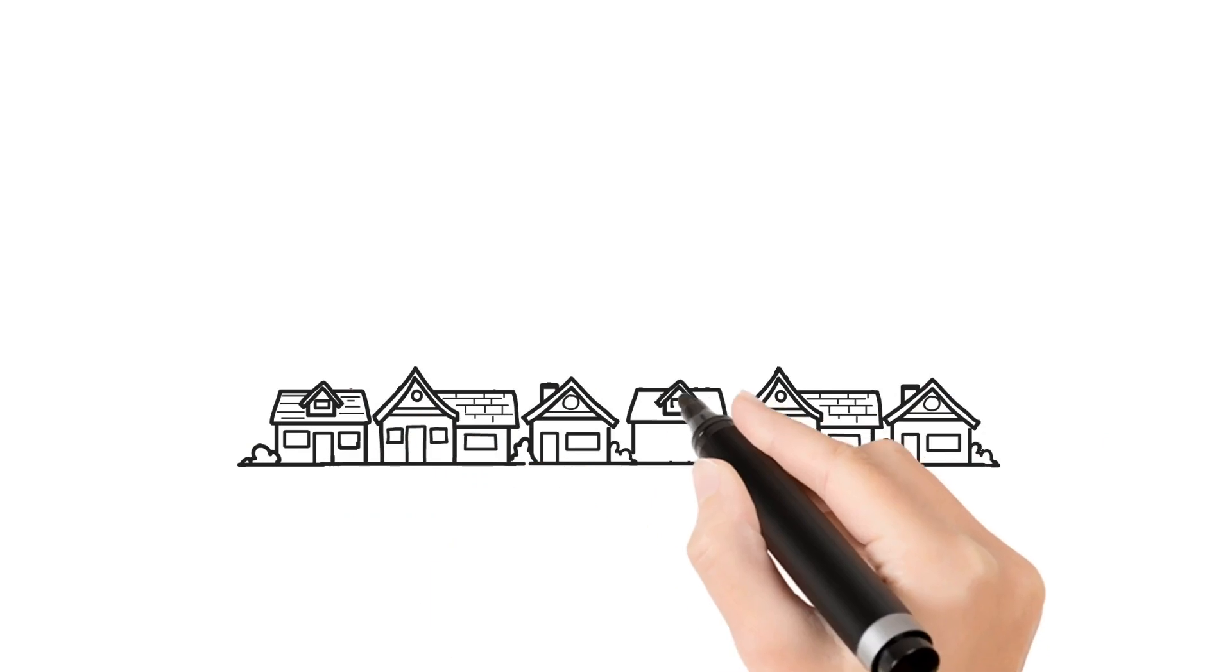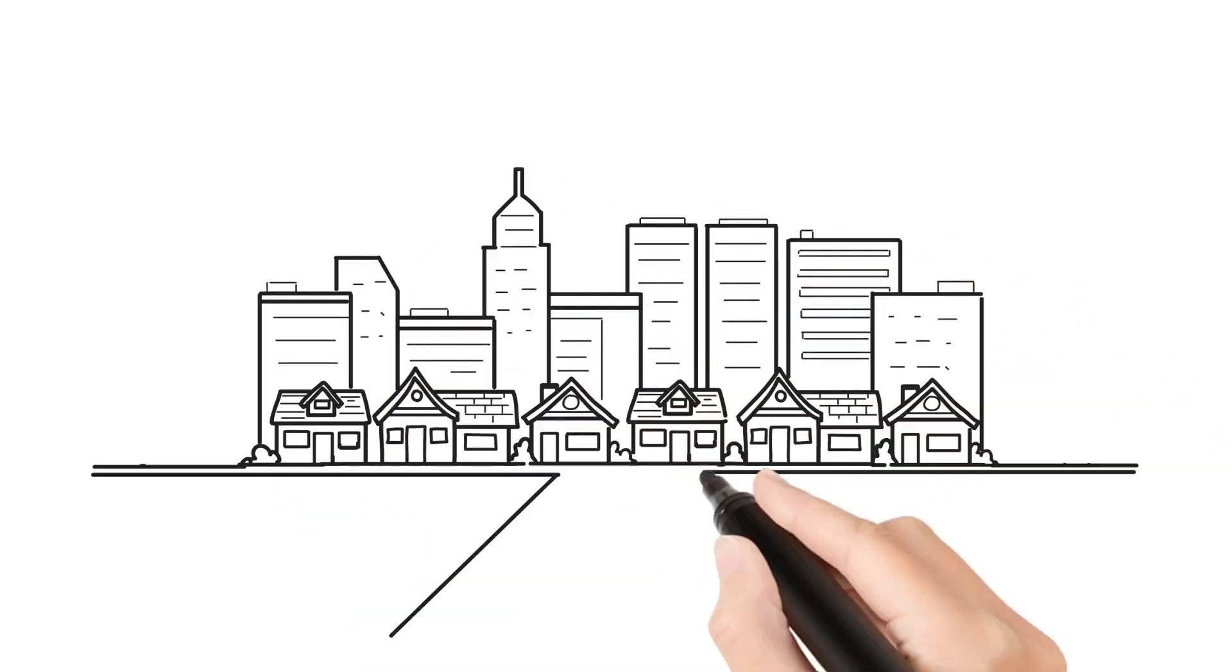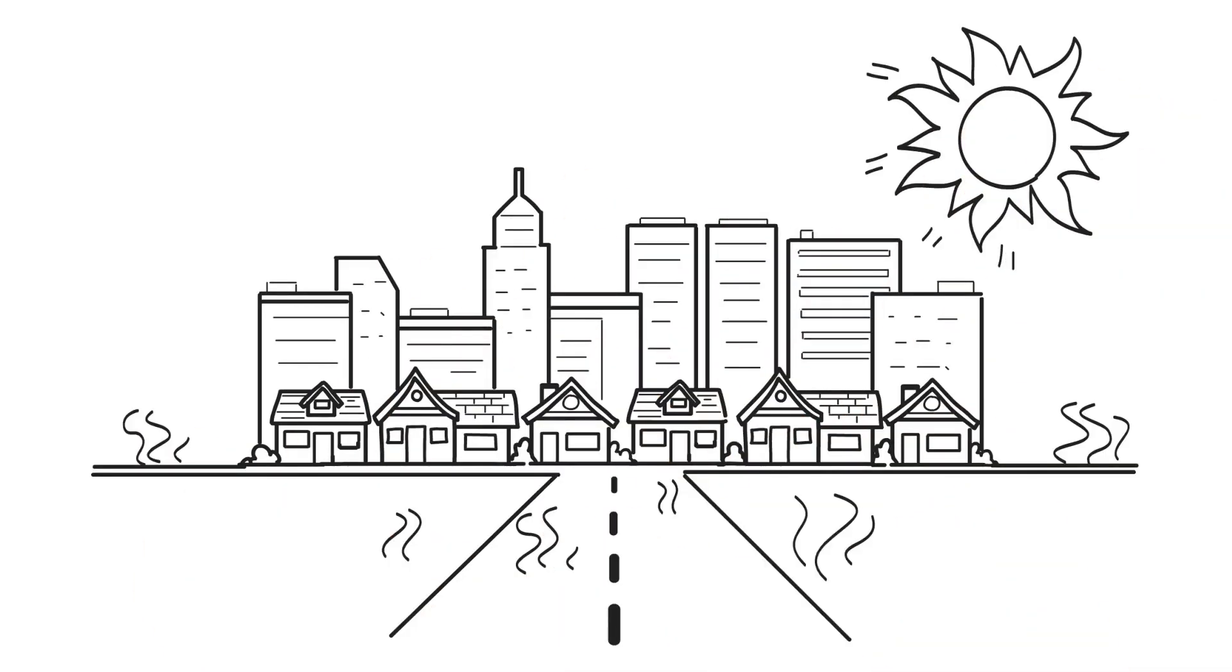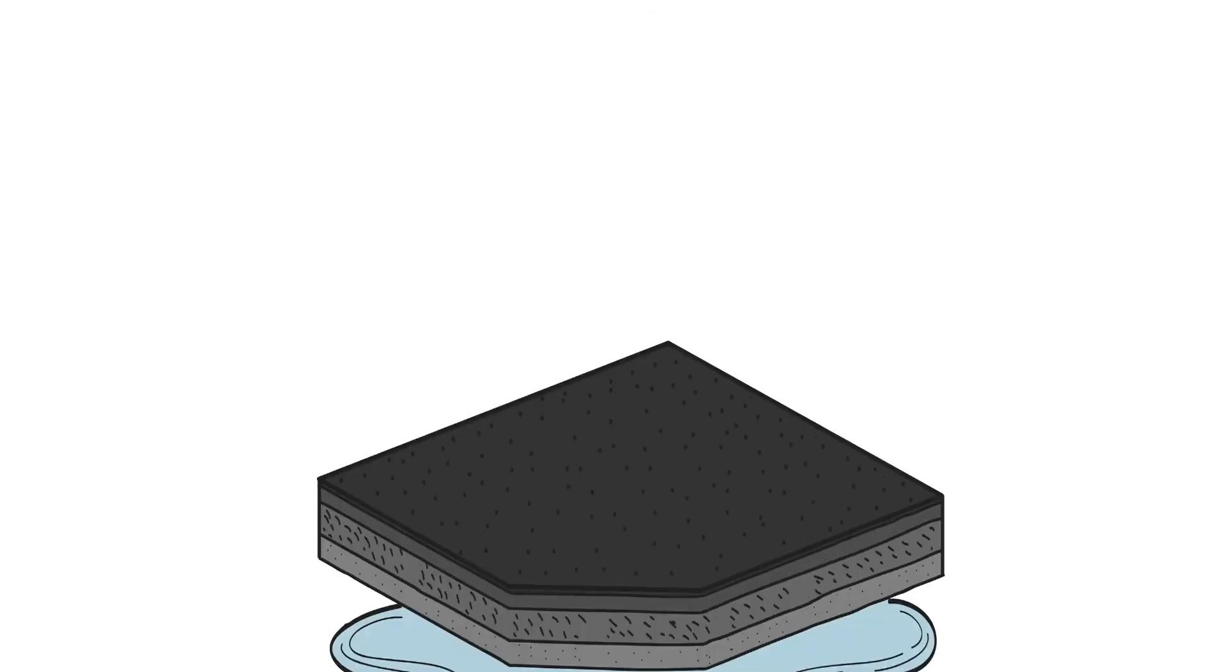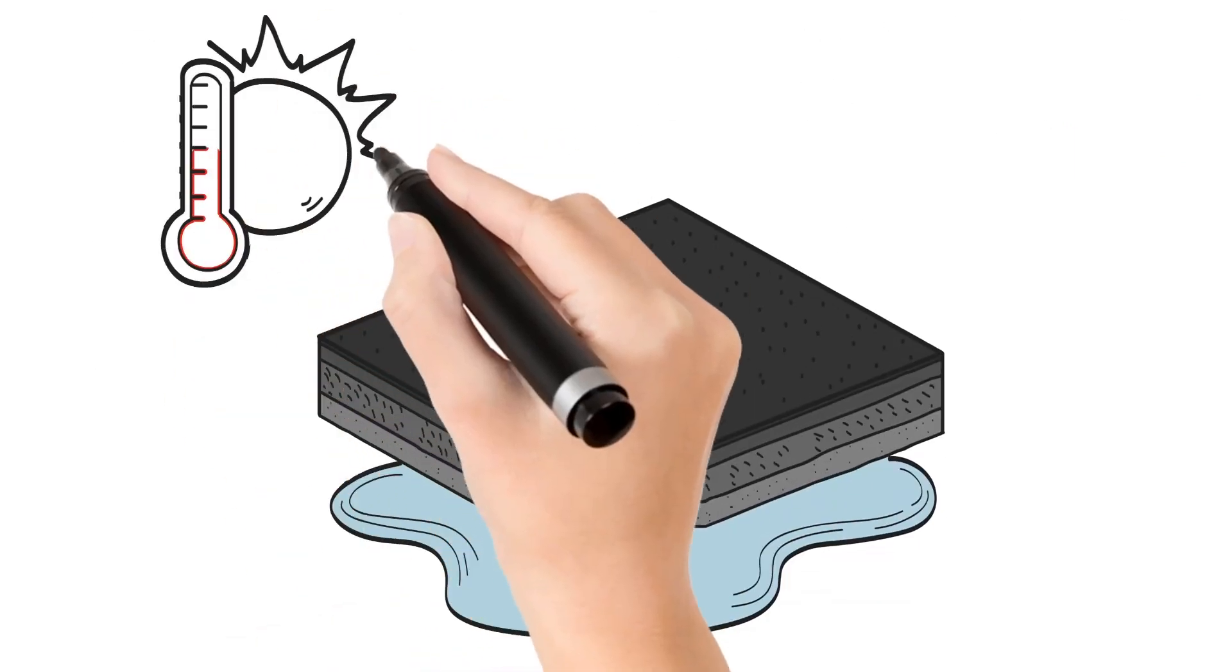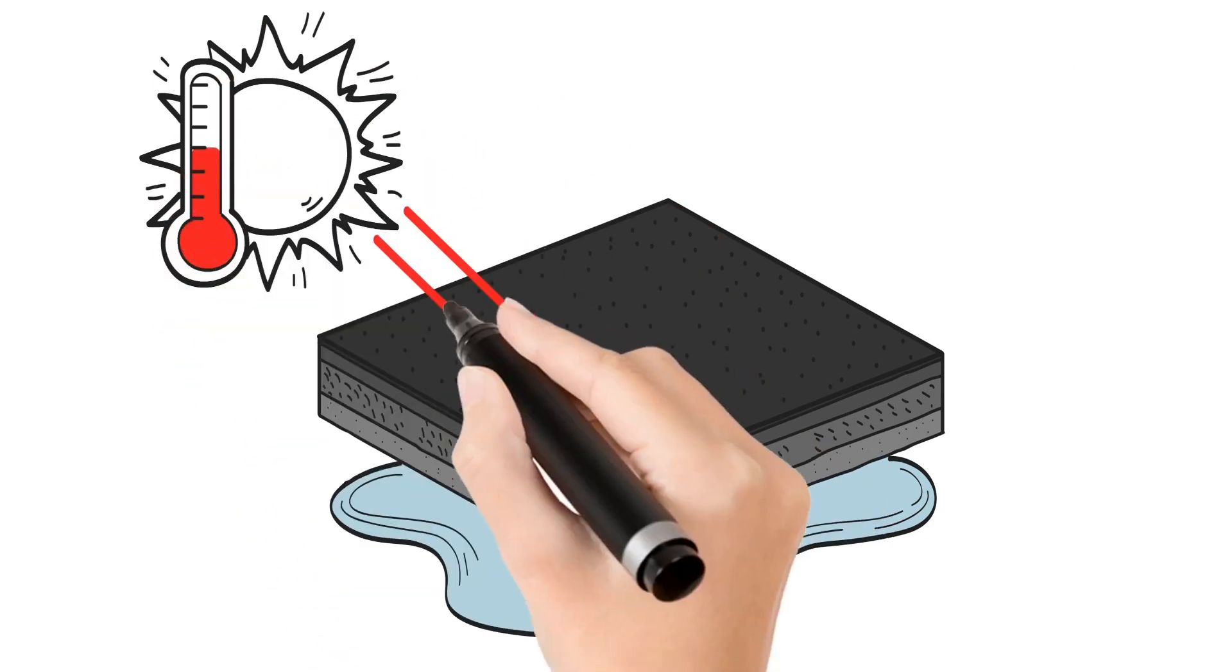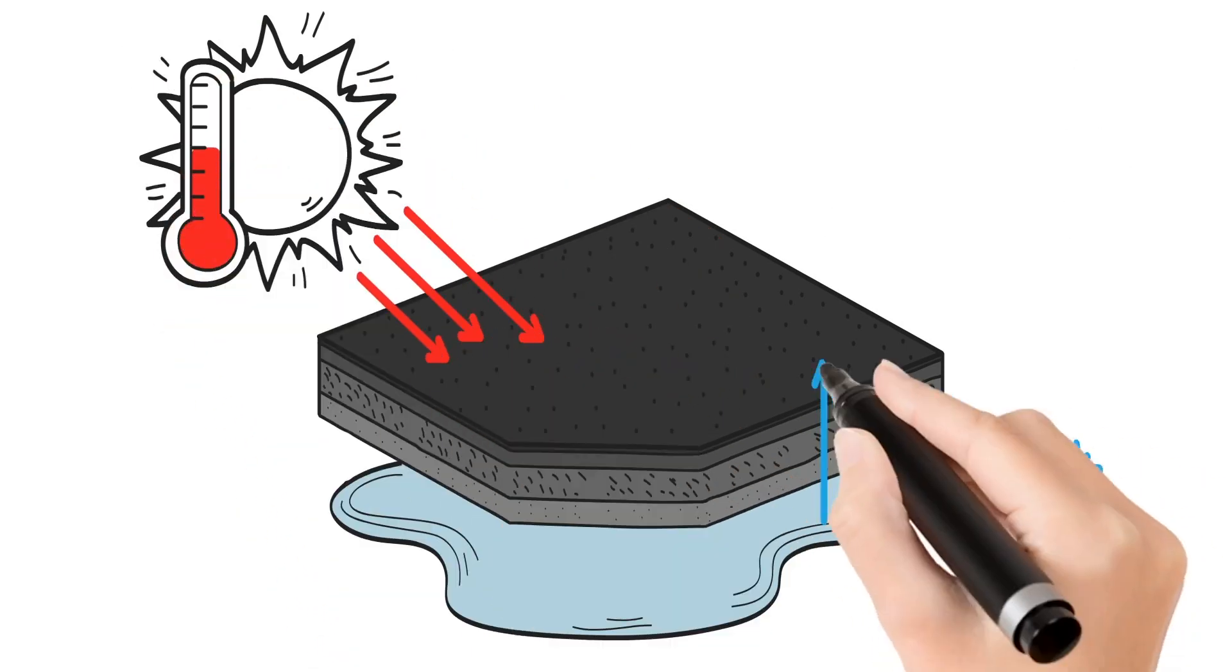Permeable asphalt reduces surface runoff and addresses the environmental problems of heat island effects. As the surface is heated in warm periods due to solar energy absorption, water held within the voids of the asphalt evaporates, creating a cooling effect.